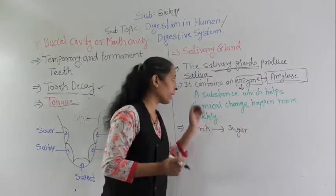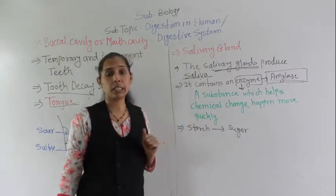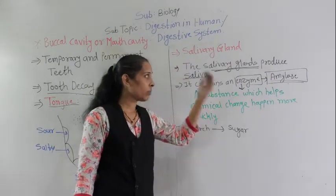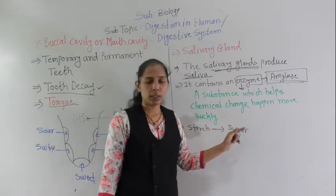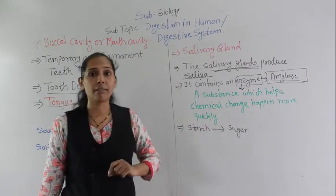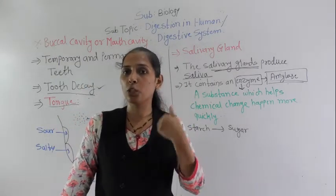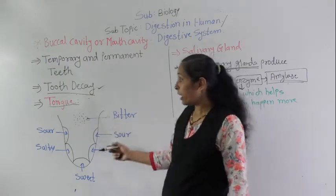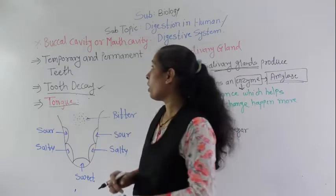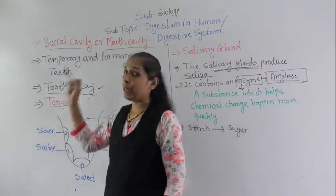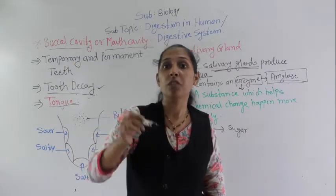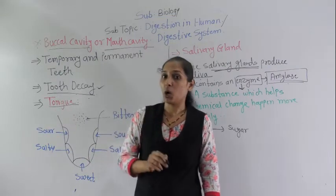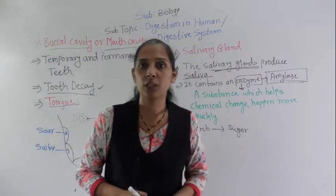With the help of amylase, the starch present in the food is converted into sugar. So with the help of saliva — and the amylase in it — starch in food is converted into sugar. Saliva also helps to make the food soft and slippery and helps push it into the food pipe. Today we have discussed temporary and permanent teeth, tooth decay, the tongue, and the salivary gland — all parts of the buccal cavity, which is the first part or starting point of the digestion process. Thank you.